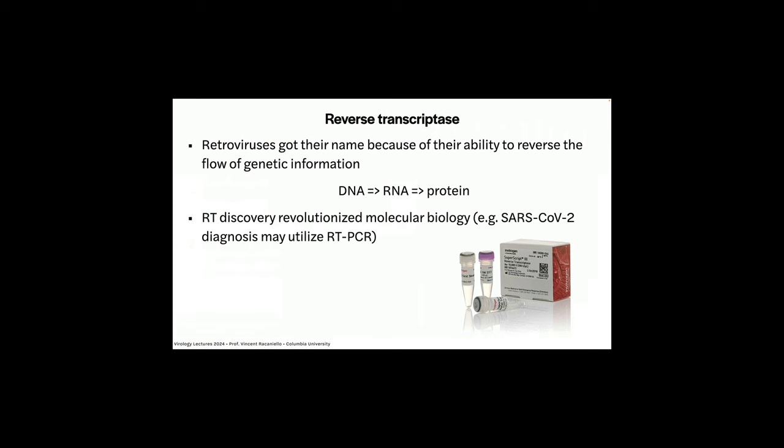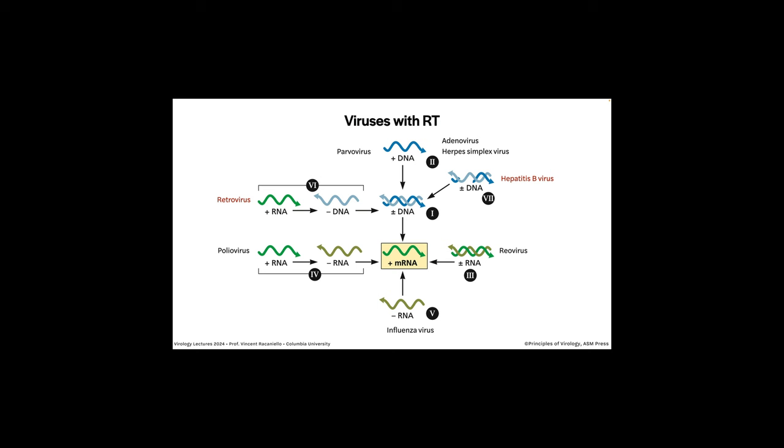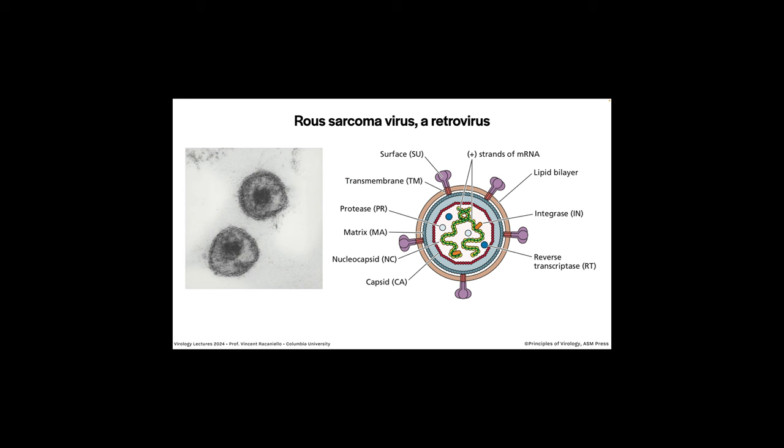Every diagnostic test and research application amplifies genes using reverse transcriptase. On the Baltimore scheme, the retroviruses sit with RNA genomes of positive polarity. But as you'll see today, they are not translated when they infect cells — they are copied to a DNA copy, first single-stranded DNA and then double-stranded DNA. The double-stranded DNA must integrate into the host cell; integration is an obligatory step for retroviruses.